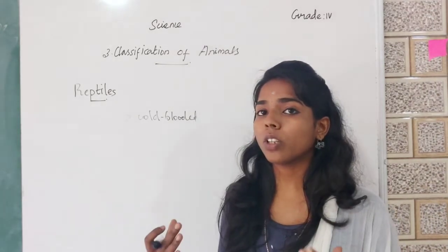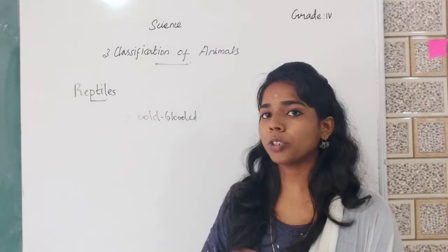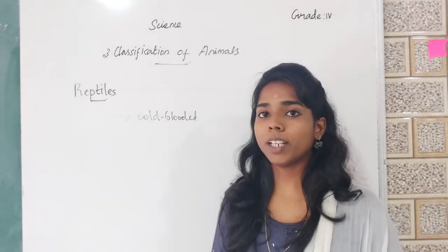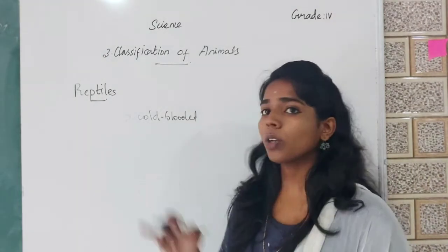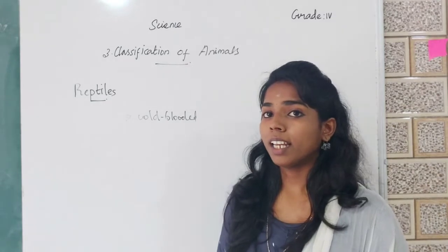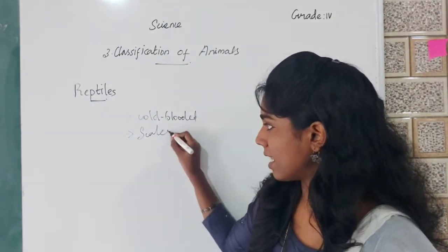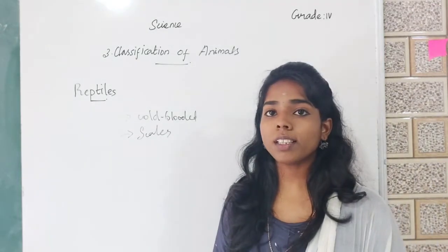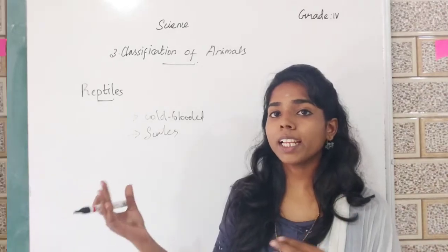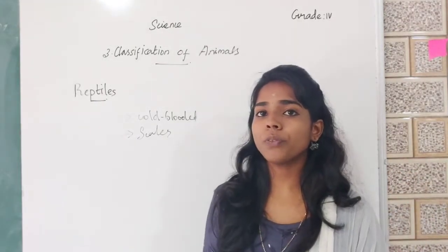These animals cannot control their body temperature. The body temperature of these animals will change according to the surroundings. So reptiles are cold-blooded animals. The second point is reptiles' bodies are covered with scales. Reptiles such as crocodiles have hard scales to prevent the loss of water from the surface of their skin.